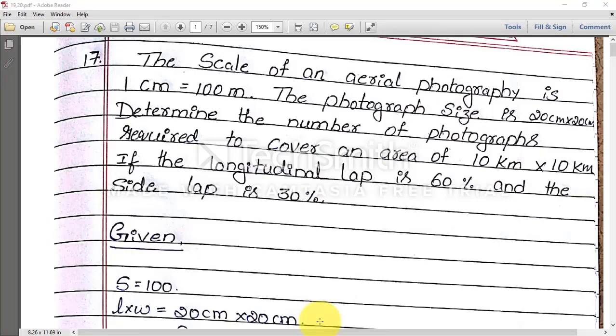Welcome everyone. Today we will be discussing the next problem in photogrammetry, problem number 17. The scale of an aerial photography is 1 cm = 100 m, that is S = 100. The photograph size is 20 cm × 20 cm.